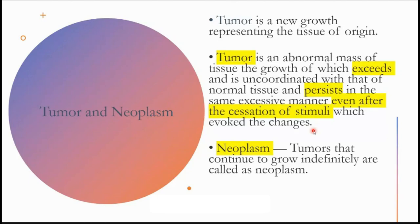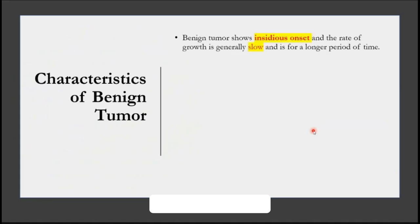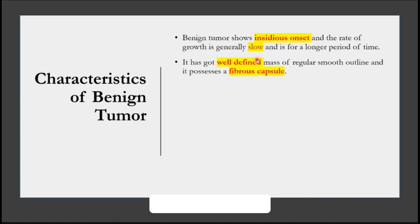Today we are going to discuss the benign tumor and there are certain characteristics you should know. Insidious onset means it is like without any reason — there is nothing which has triggered it, it just started. The rate of growth is slow and it progresses over a very long period of time. When something is very slow and of long duration, the term we use for those conditions is chronic — as opposed to acute, which is fast and progresses in a very rapid manner. It will have a well-defined mass with a fibrous capsule.